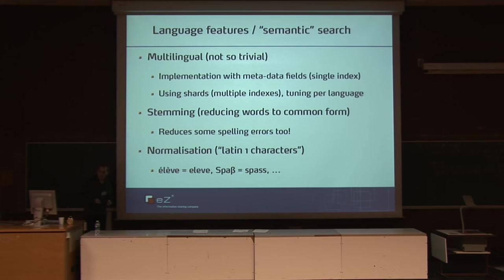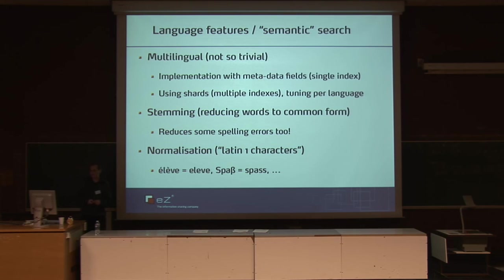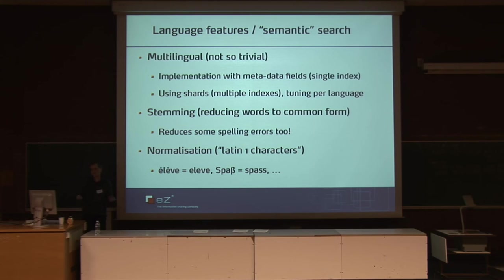Stemming, which is used to reduce words to a more common form, has a side effect that it almost magically corrects spelling errors, although spell checking is also provided as explained before. Another nice feature in the analysis steps is activating normalization — for example, Latin-1 characters found in French, Eastern European languages, or German can all be normalized to a common form, and the same applies to query terms the user enters. So the match is always there regardless of whether the keyword was spelled with an accent or not, catching some typical spelling errors introduced by users.